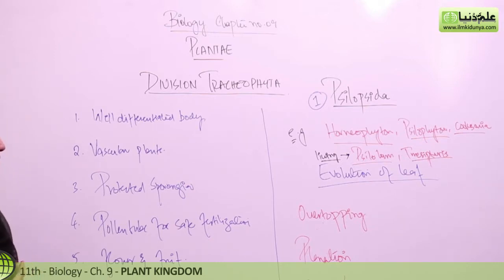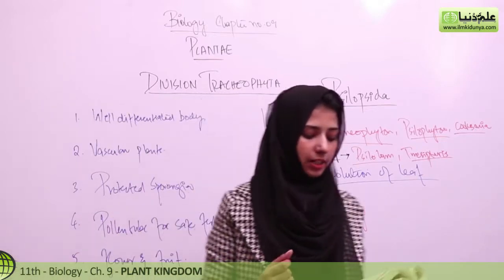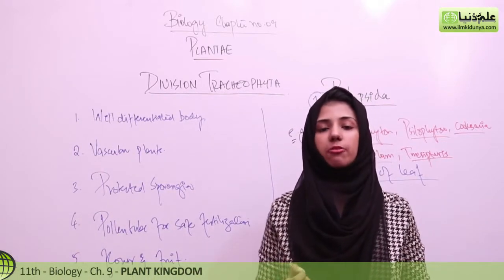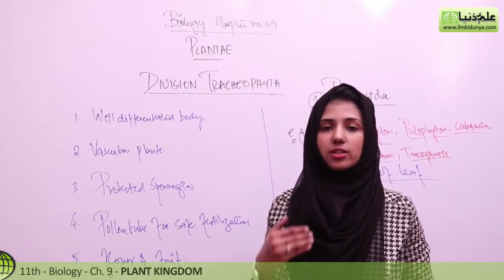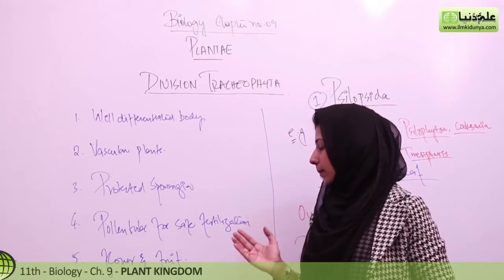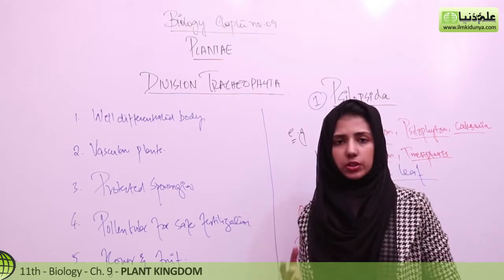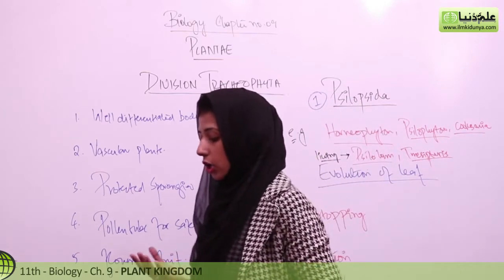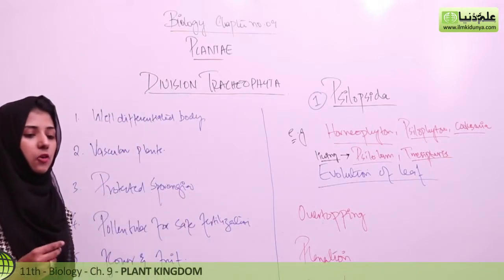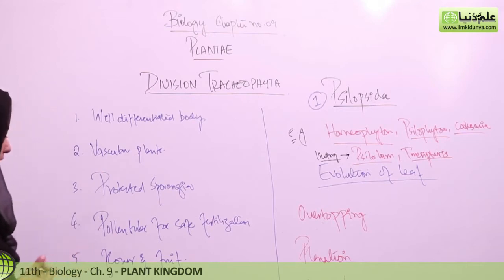Fourth is pollen for safe fertilization. In the case of plants, water-independent transmission of male gametes towards the female gametes takes place — water-independent fertilization. After that, water is not needed. They can grow well in a dry environment.